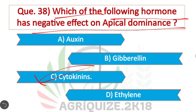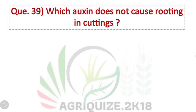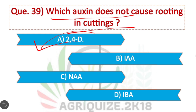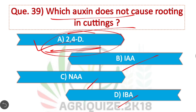Question 39: Which auxin does not cause rooting in cuttings? Option A is correct: 2,4-D. The synthetic auxin 2,4-D does not cause rooting in cuttings. The other three auxins — IAA (indole-3-acetic acid), NAA (naphthalene acetic acid), and IBA (indole-butyric acid) — do cause rooting in cuttings.